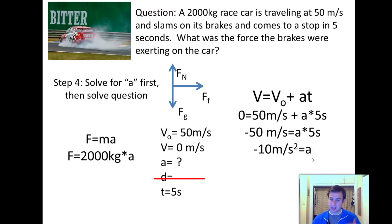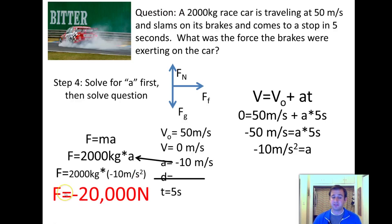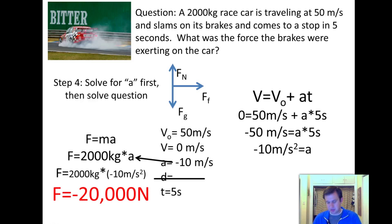We're not done yet — we plug that into our F = MA. This becomes really easy: 2,000 kilograms times negative 10 meters per second squared gives us a force of negative 20,000 newtons. This problem isn't really harder than anything we've done before — it's just doing two problems at once: first solve for acceleration, then plug it in and solve for force.